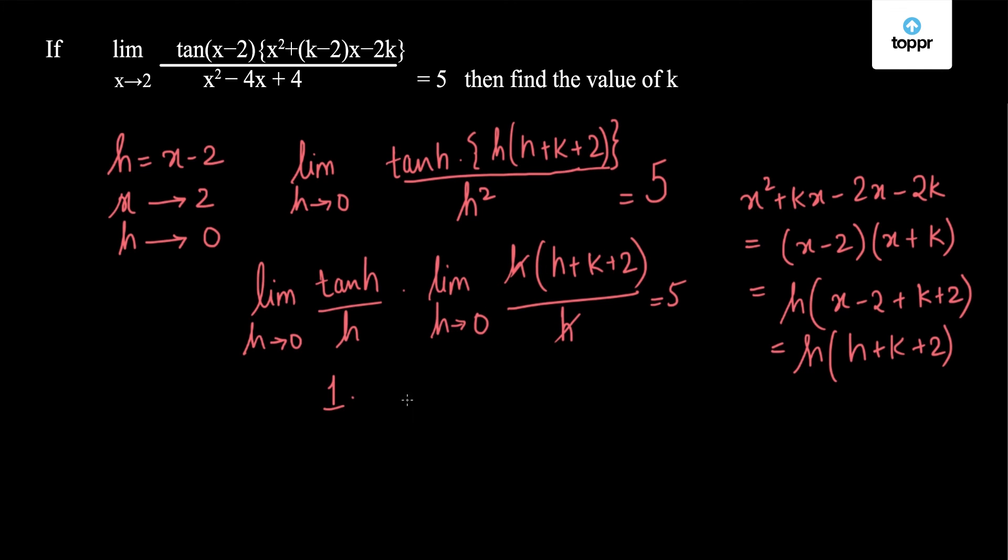This h will get cancelled. So we have limit h tends to 0 of (h + k + 2) equals 5. We insert the value of h as 0, so we get k + 2 equals 5, which means k equals 3. This is the solution to our problem.